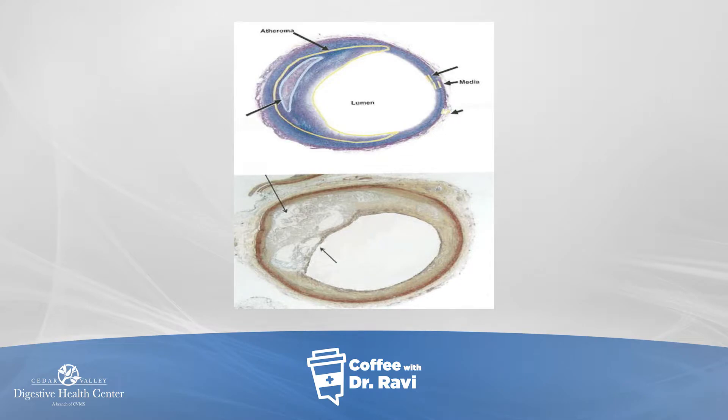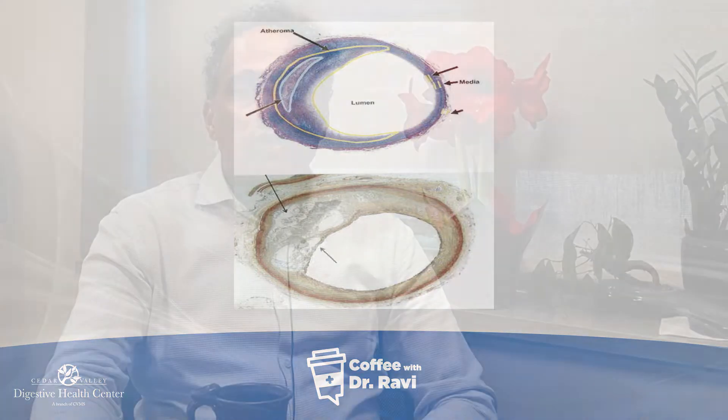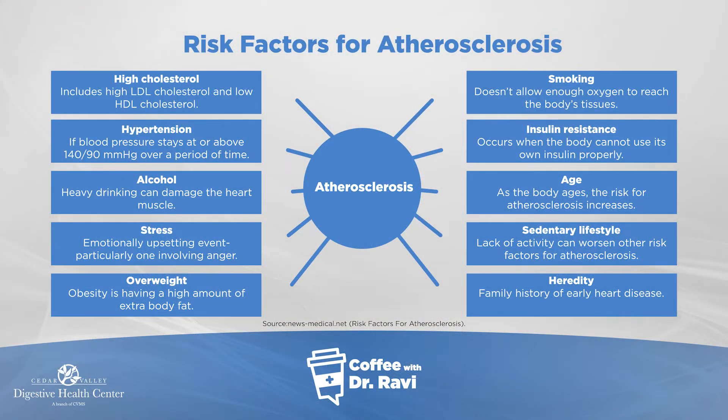The fatty deposit you're seeing on these slides is fat that's getting under the surface of the lining of the blood vessel. Over a period of time, this fatty streak can become something more dense. What you're seeing now is a cross-section of blood vessels showing the vessel getting narrowed — this is what we call a plaque developing inside the coronary blood vessels.